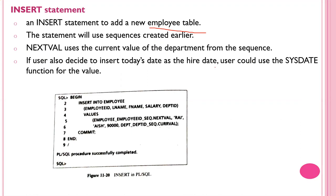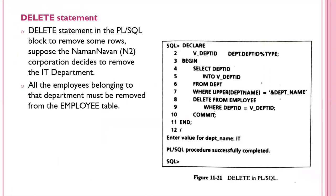If you want to insert today's date as a hire date, use SYSDATE - SYSDATE is a function. For example: BEGIN INSERT INTO employees VALUES (...). For DELETE, to remove rows from the employee table: DELETE FROM employees WHERE department_id = department_id.